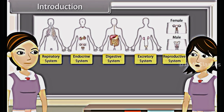We can say that each system is specialized to do a specific function, such as nutrition, digestion, respiration, transport of materials, and excretion respectively. In each system, all the organs work together so that the whole system can work properly.